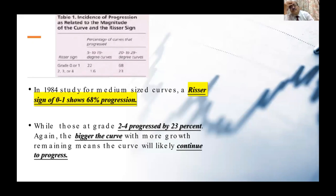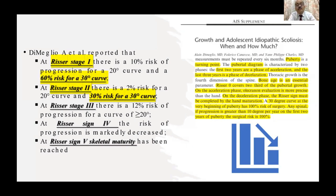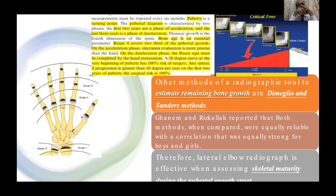A 1984 article suggested that Risser sign 0 or 1 showed 68% chance of curve progression in scoliosis patients. As the Risser stage increases to 2, 3, or 4, the chances of progression gradually decrease. Dimeglio also confirmed that a patient with Risser stage 1 and a 30-degree curve has a 60% risk of progression, while at Risser stage 2 this drops to 30%. Hand X-rays and olecranon X-rays are also measurements of skeletal age and maturity, with similar prognostic value.